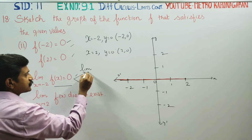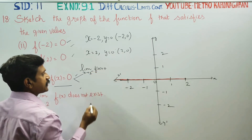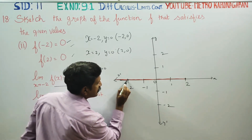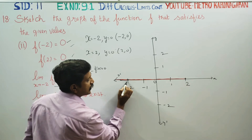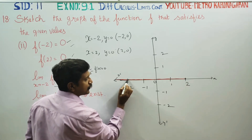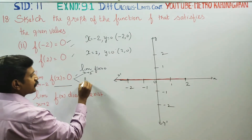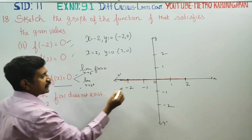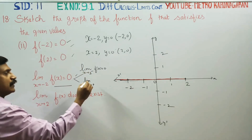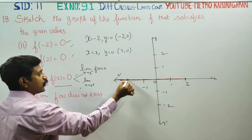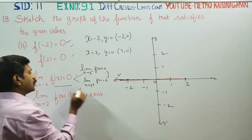The limit as x turns to 2 from the left-hand side — you must get the answer 0. Check it out: the left-hand side of 2 is equal to 0, you will approach 0. Now the right-hand side of x equal to 2 plus: if you approach the limit, your answer is also 0. Since both are equal, the limit exists.